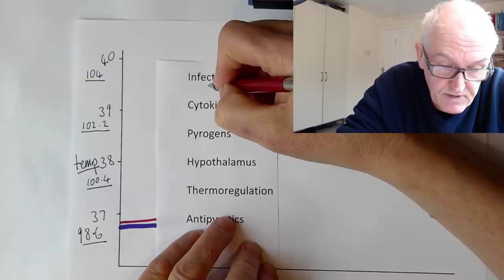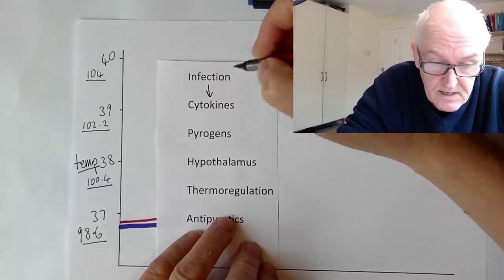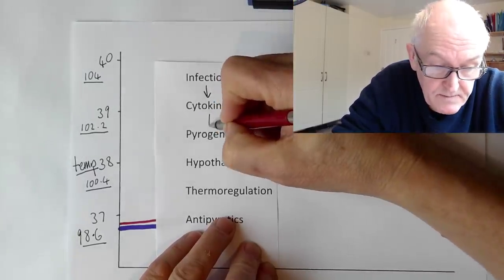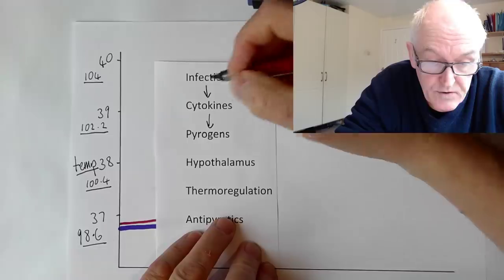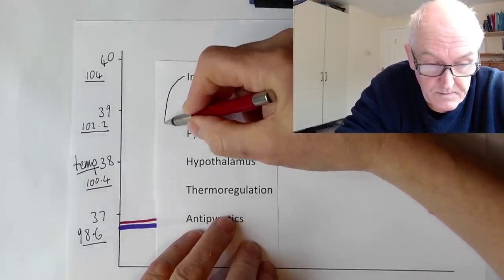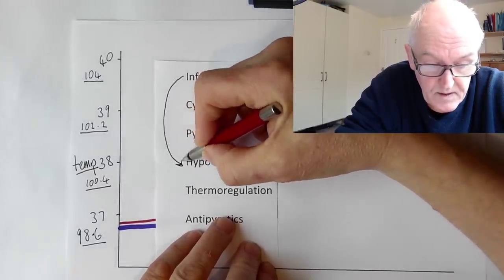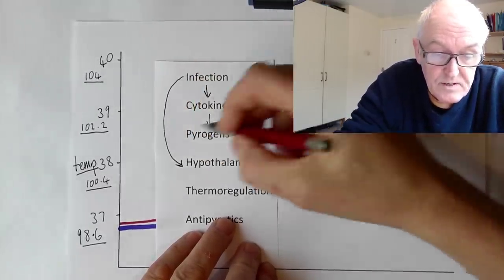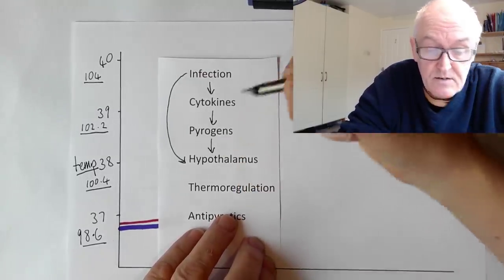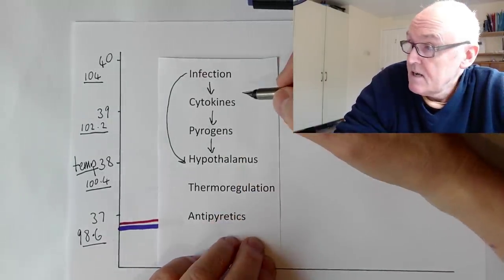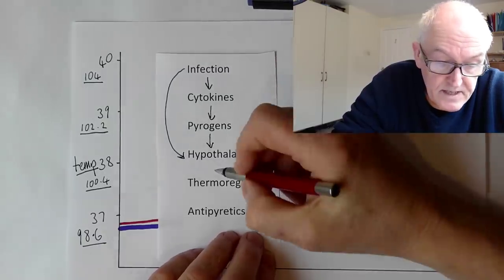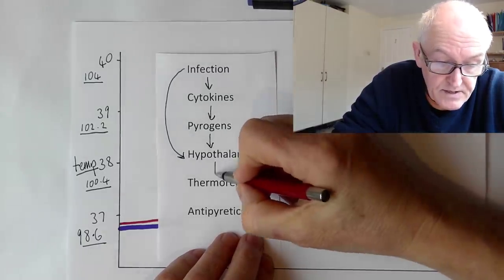So infection causes the release of cytokines. Cytokines are pyrogens, although the infection itself will cause some direct effect on the hypothalamus as well as exogenous pyrogens. But the pyrogens that the body produces — these cytokines — affect the hypothalamus and this affects thermoregulation.